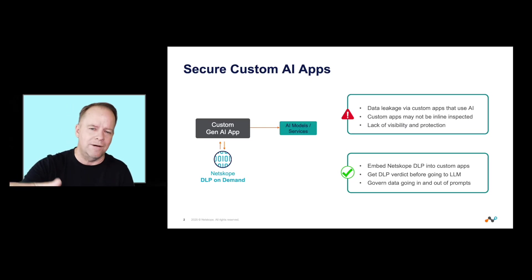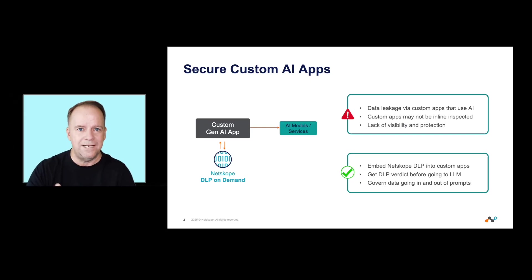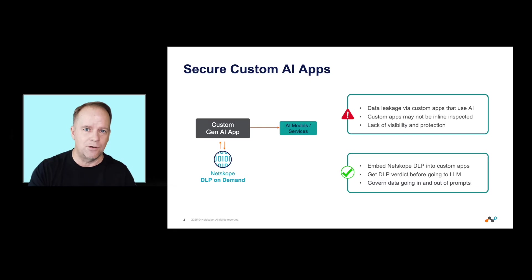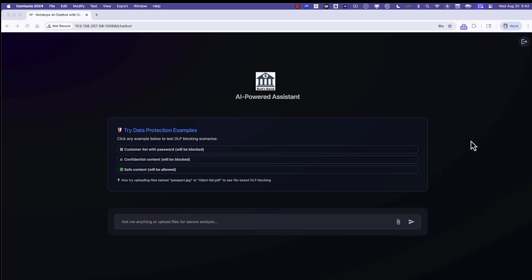And then data coming out of the LLM can also go through Netscope DLP. So you can look for data going in and data going out, and build in that logic into your application, but use Netscope DLP On Demand for the verdict. Let me give you an example of what this looks like for this application.